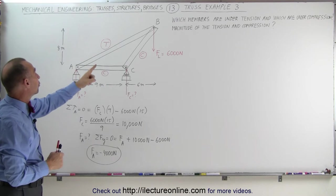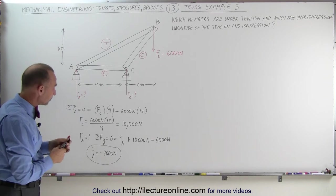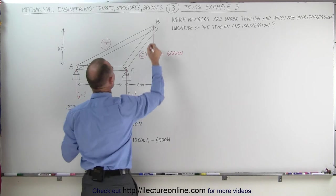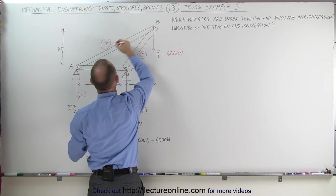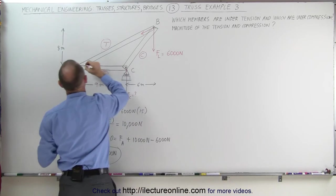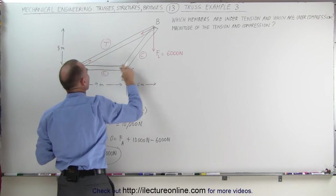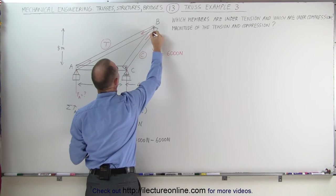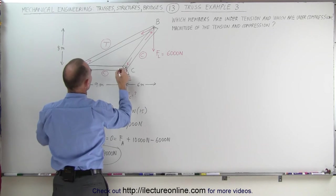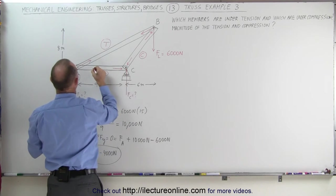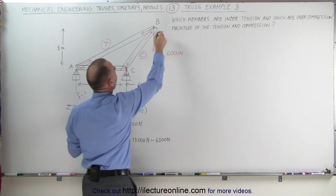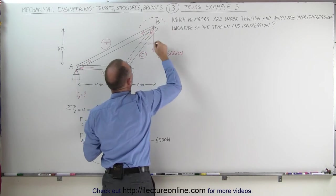Now we need to find the magnitude of the forces on the members. What we can do is draw the forces acting on pin B. The tension beam pulls in this direction and this direction. The compression beam pushes back here and here. The other compression member pushes this way and this way.